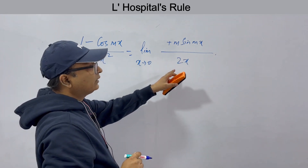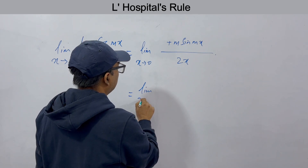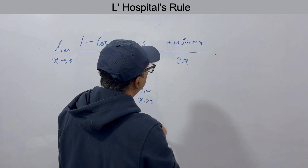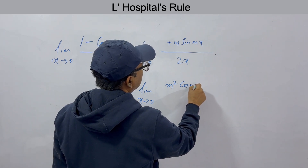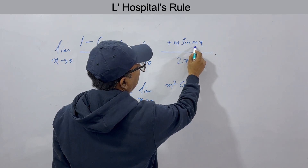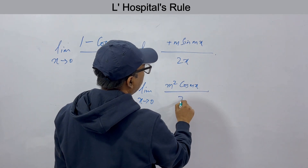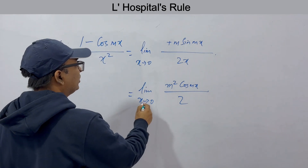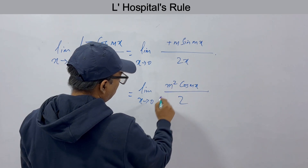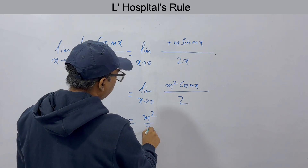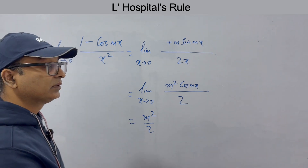Still in 0 by 0 form, so we take the second derivative. Limit x→0: the derivative of m·sin(mx) is m²·cos(mx), and the denominator derivative is 2. Now put x = 0: cos(0) = 1, so the answer is m²/2. We are able to find the limit of this function by L'Hôpital's Rule.